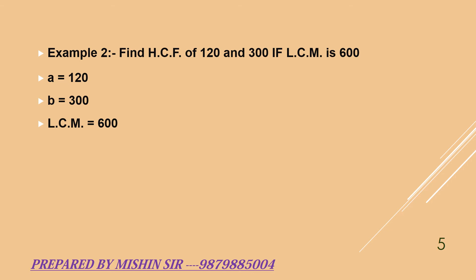We apply the formula: HCF equals a into b divided by LCM. Substituting the values: 120 into 300 divided by 600. We get 60. So HCF of 120 and 300 is 60.